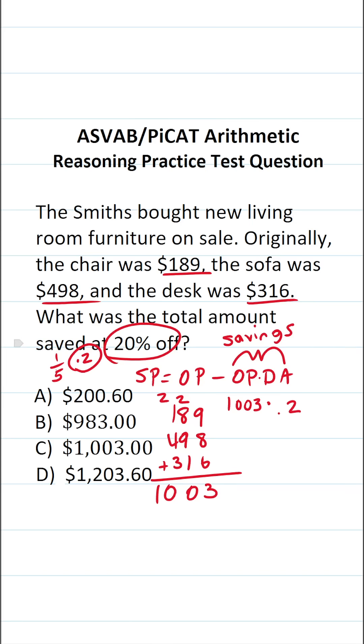So again, to calculate our savings, the total amount saved, we have to do 1,003 times 0.2. So I'm going to do this off to the side so as not to make a mistake. We have 1,003 times 0.2. Again, when we multiply something by a decimal, we have to take that decimal and shift it one time to the right in this case to make this 1,003 times 2, albeit with one decimal to move back into our answer.